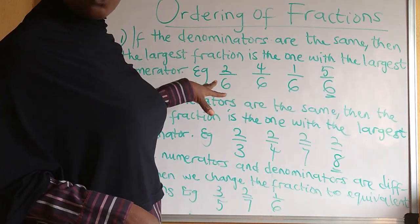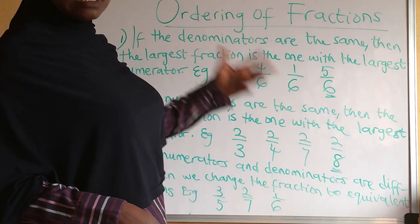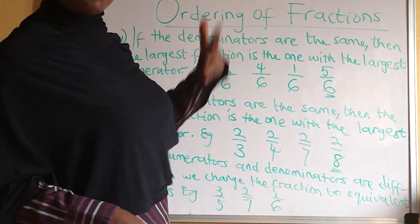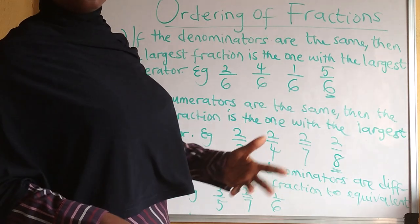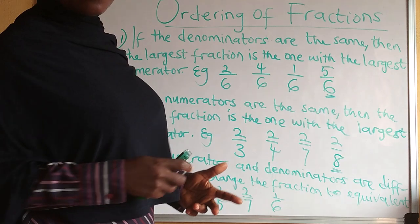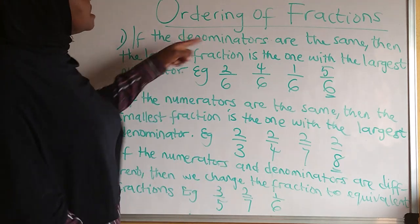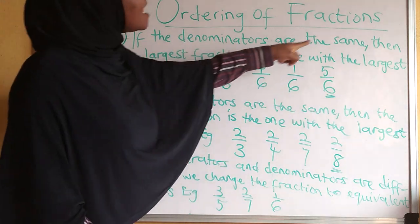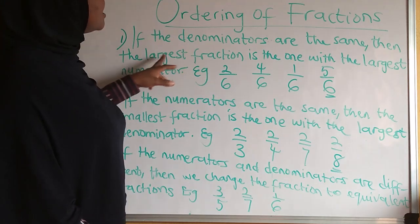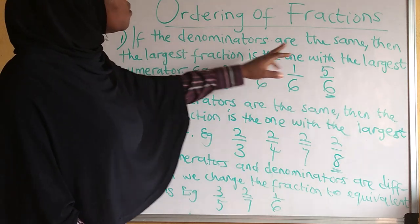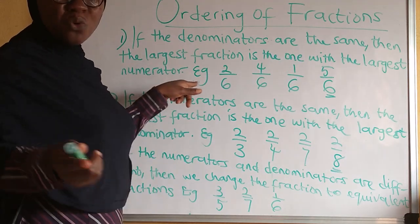Now before we proceed to ordering fractions, there are three underlying rules that we want to first establish and understand before we can move on to ordering fractions. Let's take them one by one. The first rule is: if the denominators are the same, then the largest fraction is the one with the largest numerator.